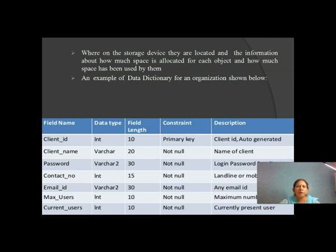The field name identifies each column. The data type for Client ID is Integer, Client Name is character/varchar, Password is alphanumeric. Similarly, the data dictionary shows the data type, the length of each field, and the constraints applied.